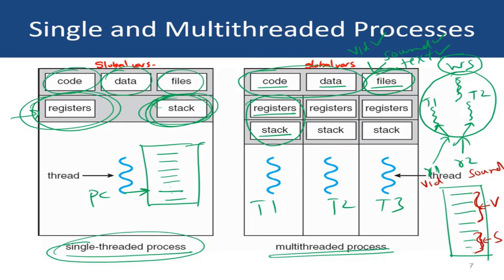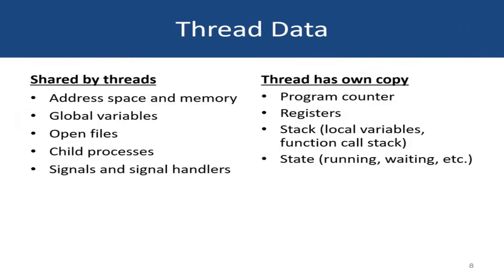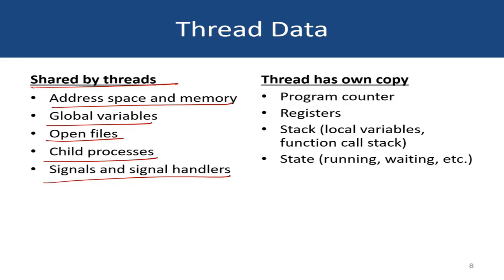So thread T1's program counter — PC1 — would be pointing somewhere in the video section, and thread T2's program counter would be pointing somewhere in the audio section, because they are executing through different logical paths within the same original program. That is why every thread needs its own copy of registers and stack. All threads belonging to the same process share the address space and main memory, share global variables, share open files, share child processes, and share signals and signal handlers.